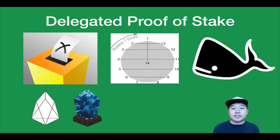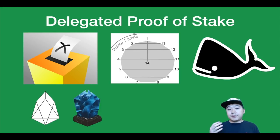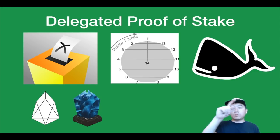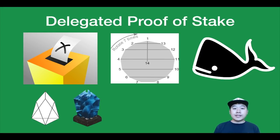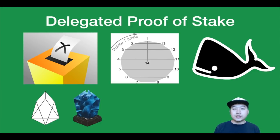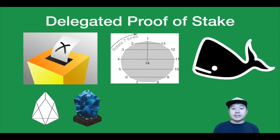Next is delegated proof of stake, which is pretty similar to proof of stake. The idea is that stakeholders like you and I can elect leaders who will vote for us and potentially pass some of the rewards to us as well. These leaders can be voted in or out at different times and they produce blocks in a round-robin fashion so they don't get to put them all in a row. This process is much more collaborative than competitive, so it's more centralized and can operate much faster than traditional approaches. One big problem is that whales have a lot of power and can vote themselves or their friends in.